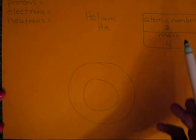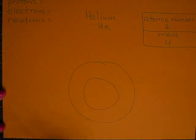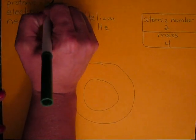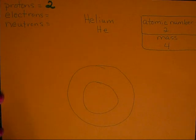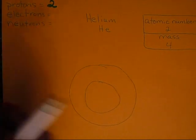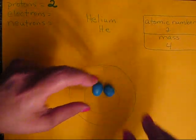The atomic number is 2. The atomic number is equal to the number of protons in the nucleus, so there are 2 protons. Here are my 2 protons in the nucleus.